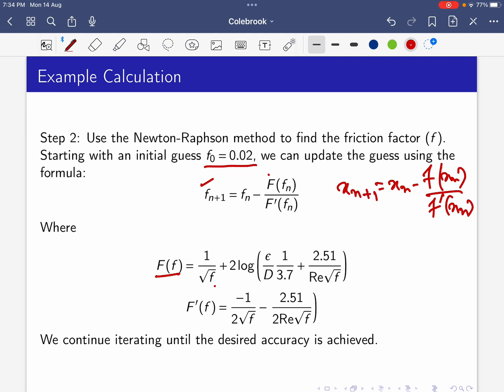If we take the derivative of F(f), we get F'(f) = -1/(2√f) - 2.51/(2Re√f). We continue iterating until the desired accuracy is achieved.